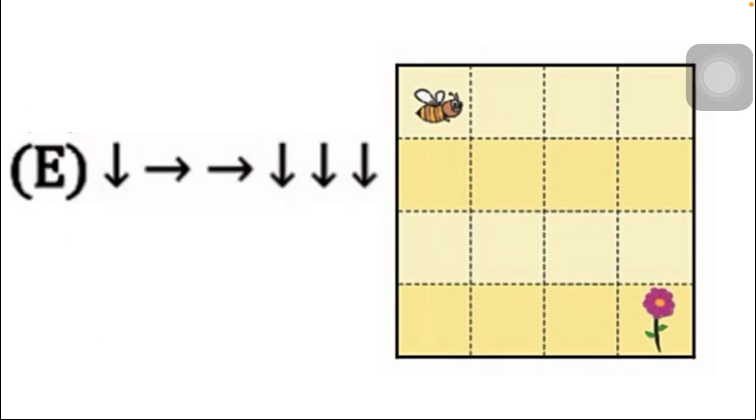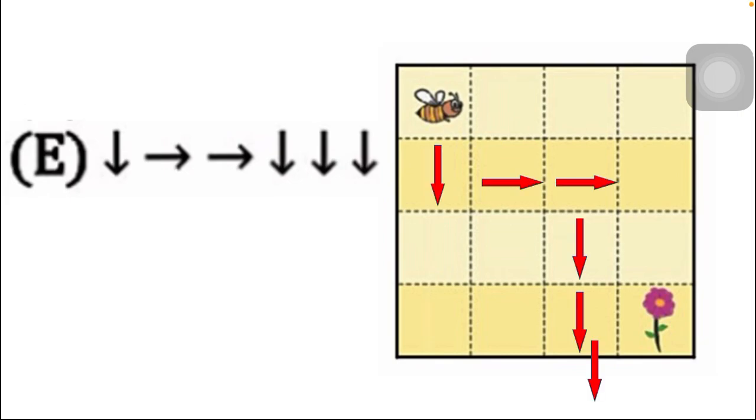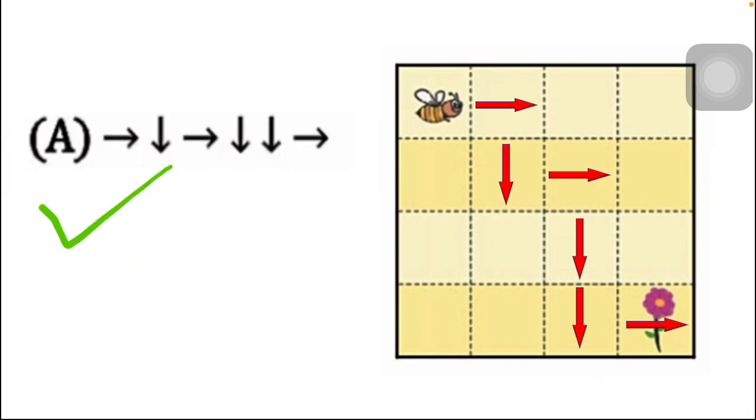And option E has six arrows. Let us check. The last arrow is going outside of the box, crossing the boundary, so this option is also not correct. Well, the answer is option A, which is our correct option. See ya!